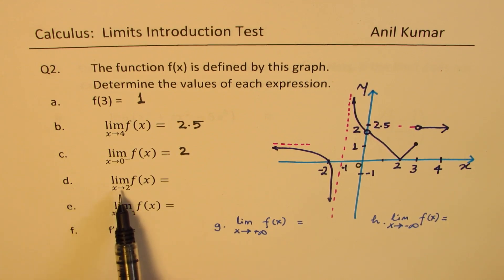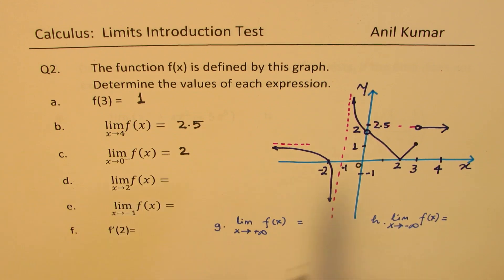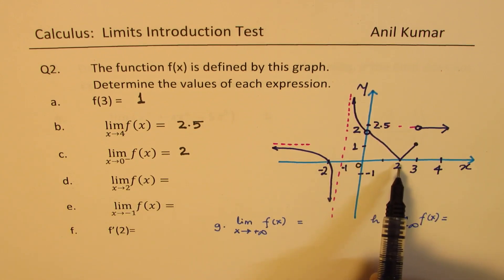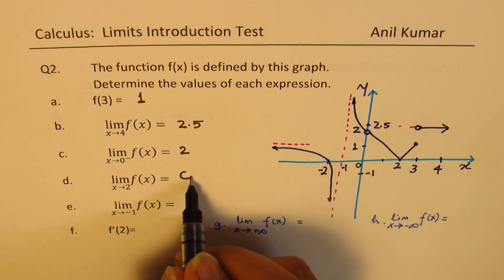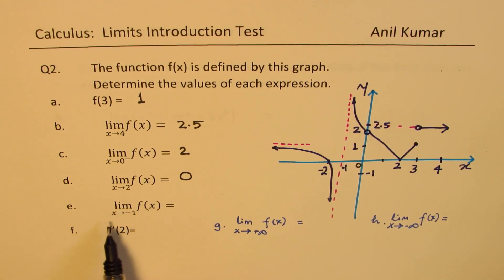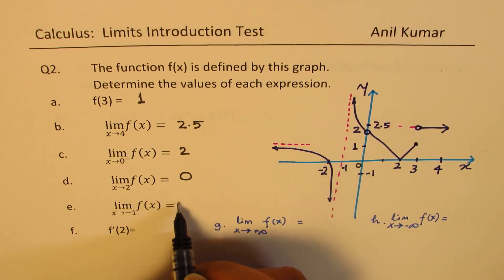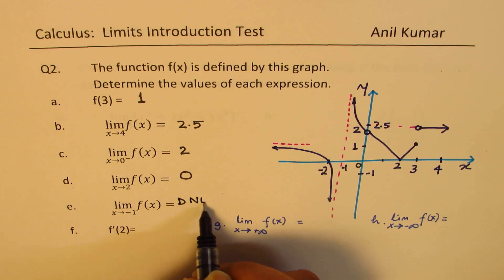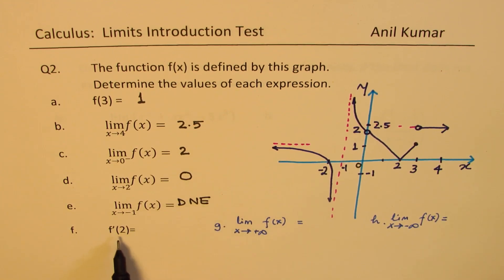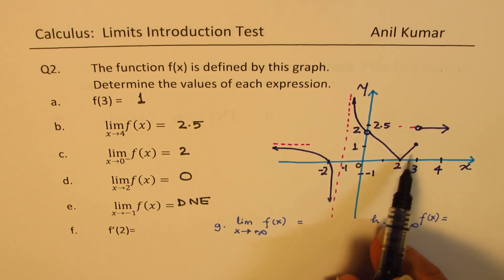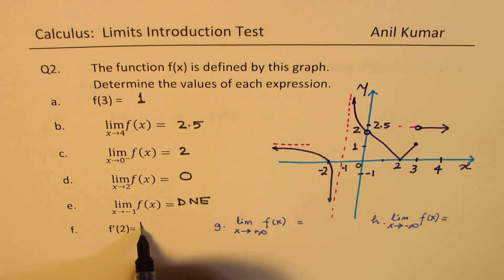D: The limit of the function as x approaches 2. When x is approaching 2, the value of the function is approaching 0 from both sides, so this is 0. E: Limit when x approaches minus 1 — at minus 1 we have a vertical asymptote, so that does not exist. F: f prime of 2 is talking about the derivative at 2. Again, we have a corner, so this also does not exist — it is not differentiable.